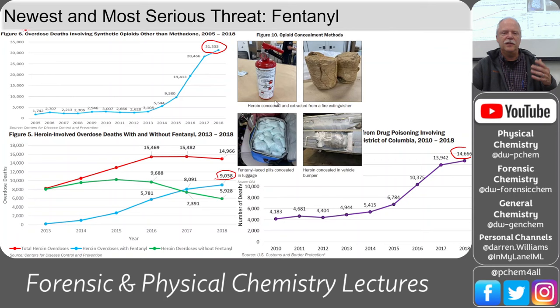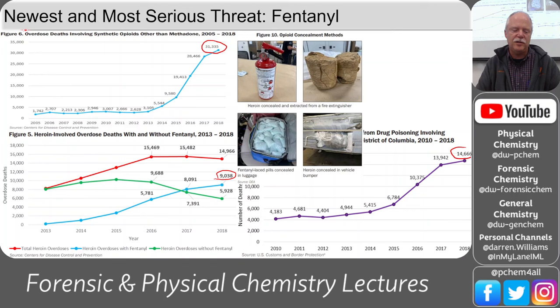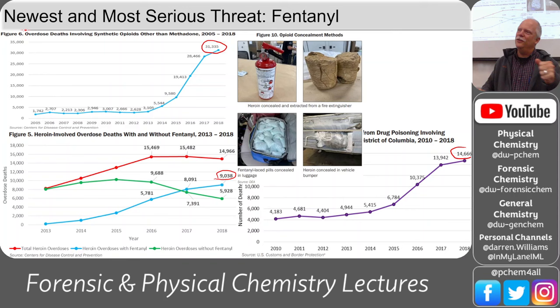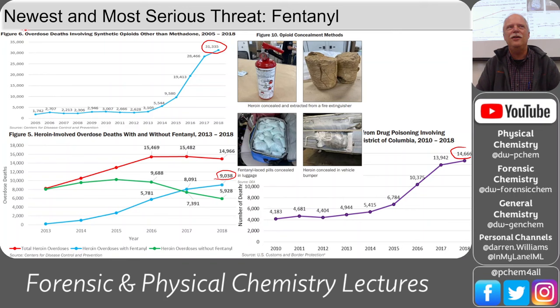A state trooper friend got lucky finding drugs many times. He said a lot of times people on a traffic stop are so confident — you ask to search the vehicle and they say sure, knowing you'll never find it. On one stop, he went around opening and closing all doors, looked under the seats. When he closed one door on a small Nissan, it had a different weight to it than the other doors. He started popping the panels off and found drugs stuffed throughout the door panels.